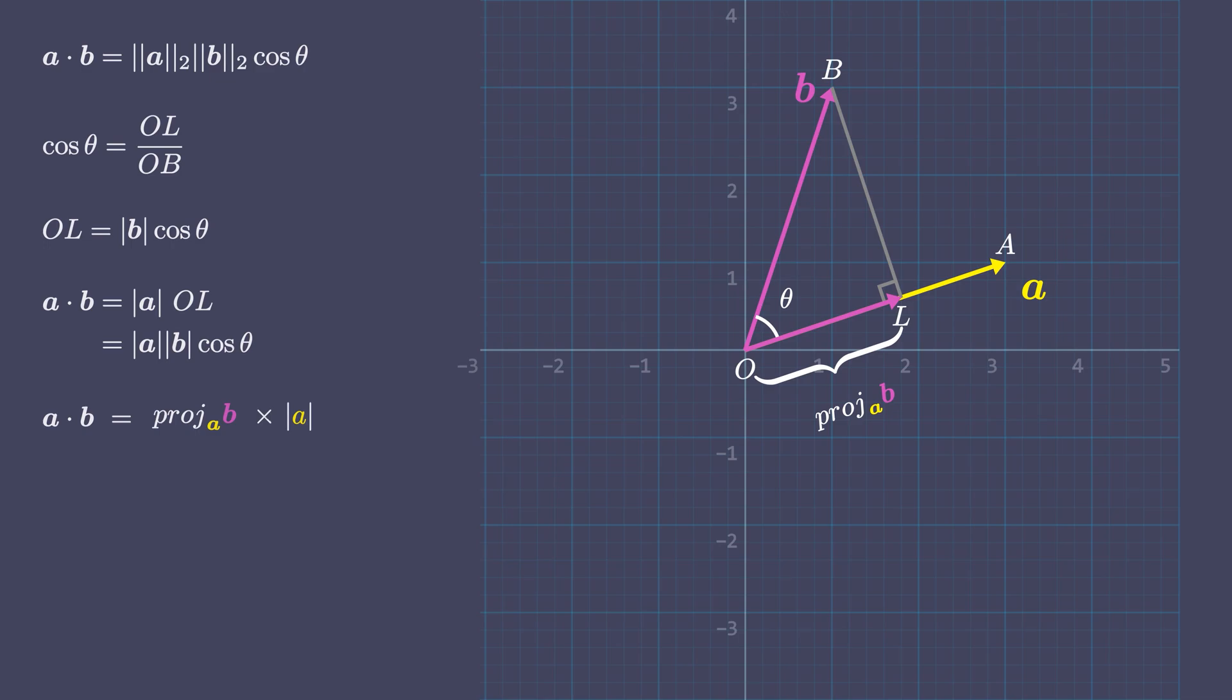We just saw that the dot product is obtained by multiplying the magnitude of the given vectors with the cosine of the angle between the two vectors and the resultant is a scalar value.